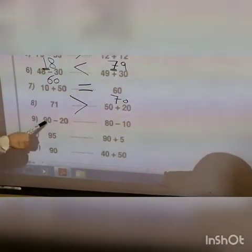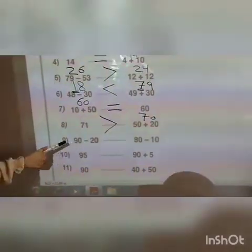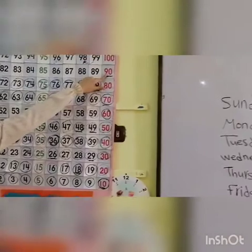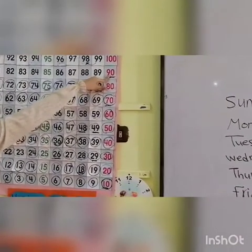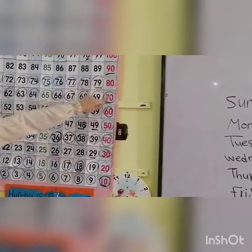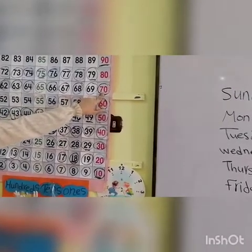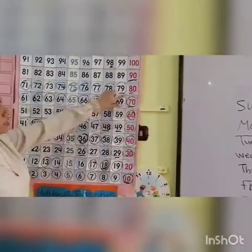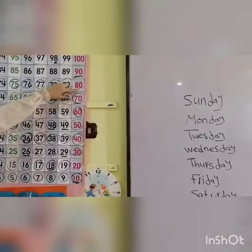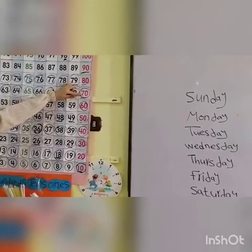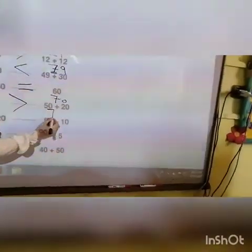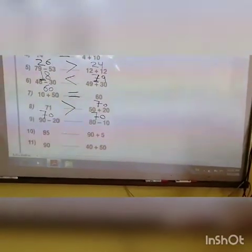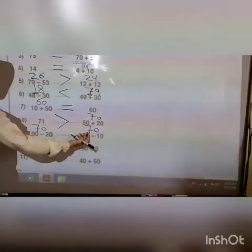Number nine: ninety minus twenty, and eighty minus ten. Stand on ninety; minus twenty — two in the tens, go down two steps — the number will be seventy; zero in units, still seventy. Stand on eighty; minus ten — one in the tens, go down one step — the number will be seventy; zero in units, still seventy. Here we have seventy and seventy — seventy is the same as seventy, so put equal.